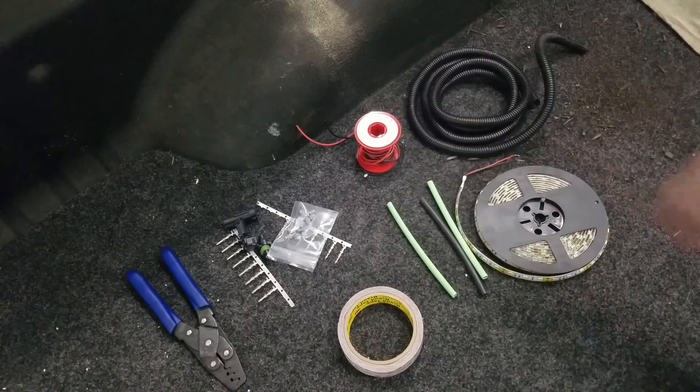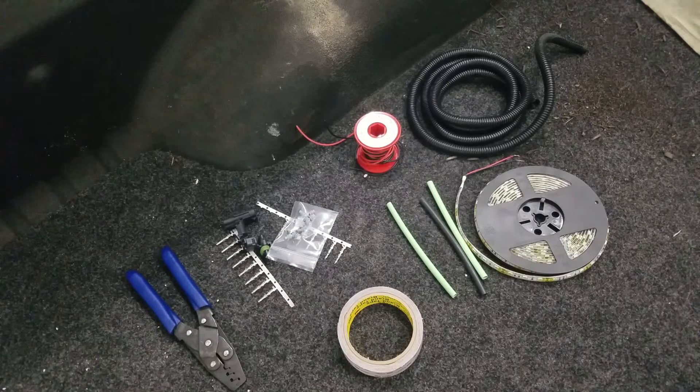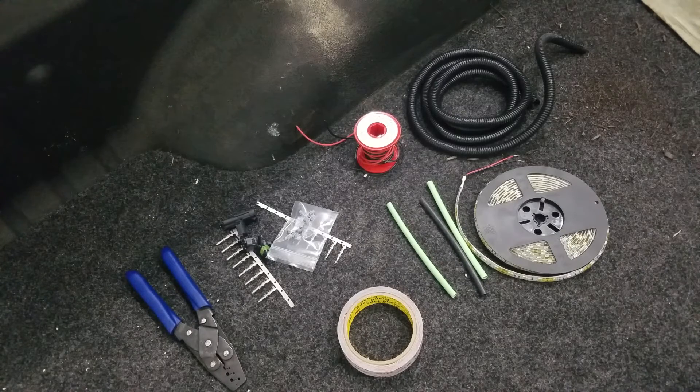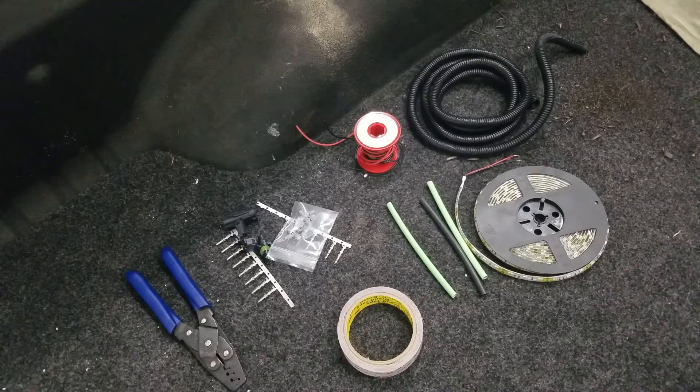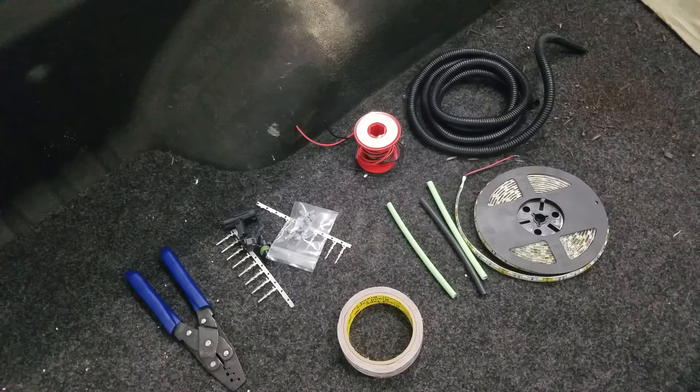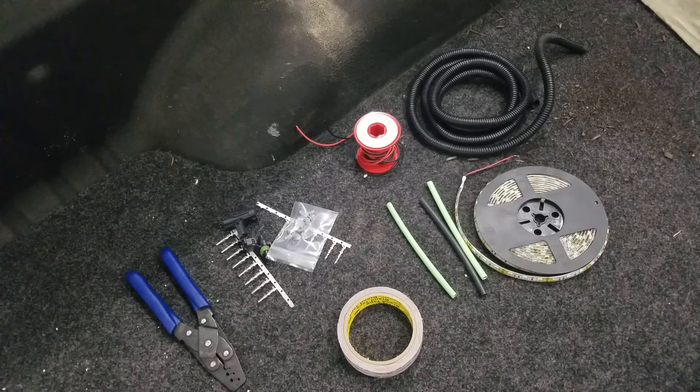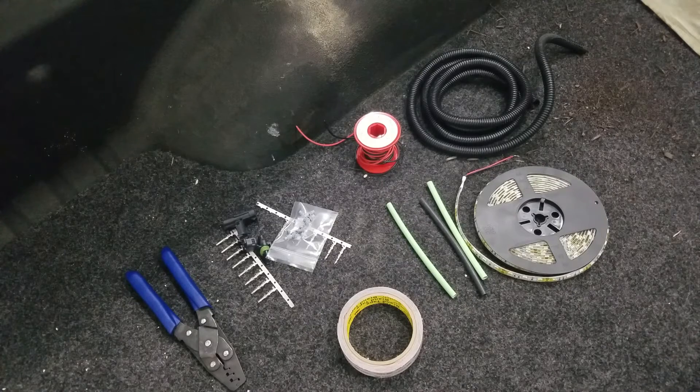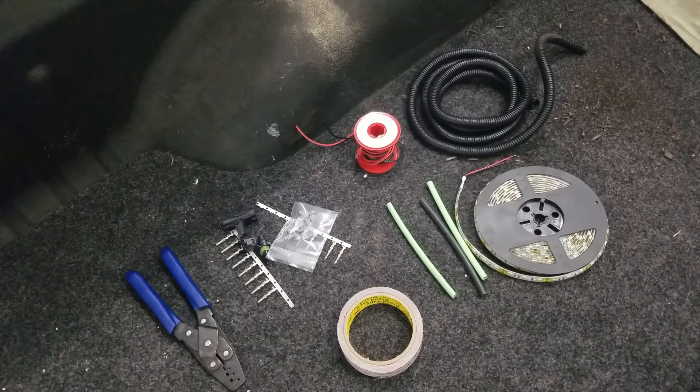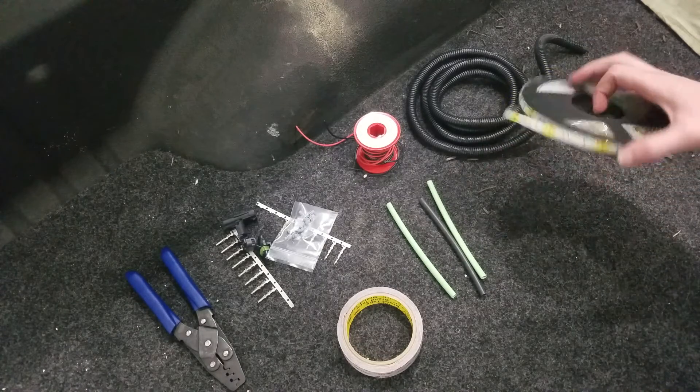Alright, so this here is all the stuff that you're going to need to be able to put lights in the bed of your truck. GM sells a kit to put lights in the bed of one of these Colorados using their own harness and two LED lights that mount at the back of the bed. You can buy all this stuff that you see here for about $40 and it does the exact same thing and it throws actually more light than the GM kit. So what I have here, I've got a roll of waterproof LEDs,